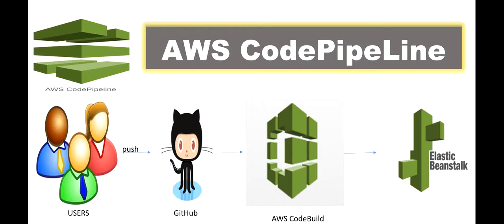It means we don't need to redeploy code again and again. In this video, first we will create one Spring Boot project and then deploy or push this code to a GitHub repository. Then AWS CodeBuild will check out the code from the GitHub repo, create the build, and after a successful build it will deploy this code into Elastic Beanstalk. Everything will be taken care of by AWS CodePipeline.